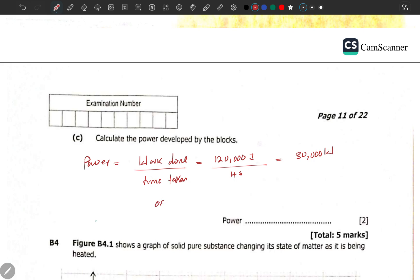Or, power is equal to force multiplied by speed. Our force was 5000, our speed of 6, which will still give us 30,000 watts. So either way, whichever you are comfortable with.